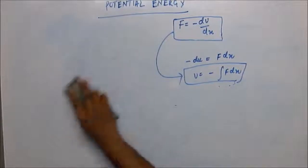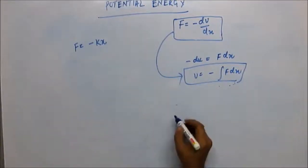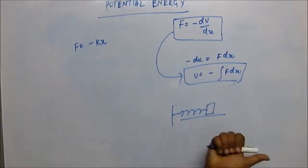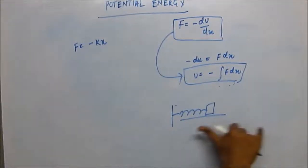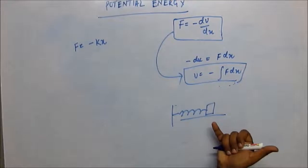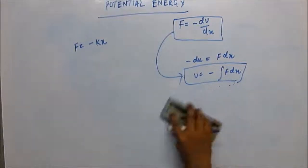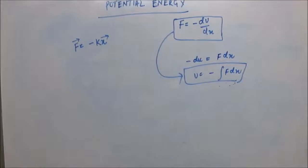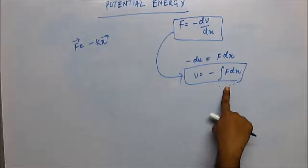Similarly, for a spring-mass system, the force is −kx with proper sign, because the spring force is always against displacement. If we try to displace it inward, the spring forces it outward; if we pull it outward, the spring brings it inward. So taking displacement as positive, the spring force is negative: F = −kx.